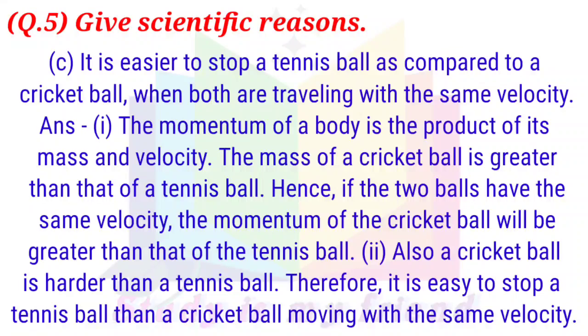C. It is easier to stop a tennis ball as compared to a cricket ball when both are travelling with the same velocity. Answer: The momentum of the body is the product of its mass and velocity. The mass of a cricket ball is greater than that of a tennis ball. Hence, if the two balls have the same velocity, the momentum of the cricket ball will be greater than that of the tennis ball. Also, a cricket ball is harder than a tennis ball. Therefore, it is easier to stop a tennis ball than a cricket ball moving with the same velocity.